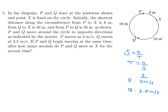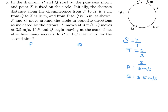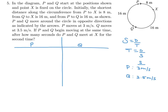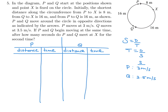We're going to make a table for P and Q with columns for distance and time. For P, the first distance from P to X is 8. When it makes another full rotation, which is 40, the next distance would be 8 plus 40, which is 48. Then keep adding 40: 88, 128, 168, and so on.